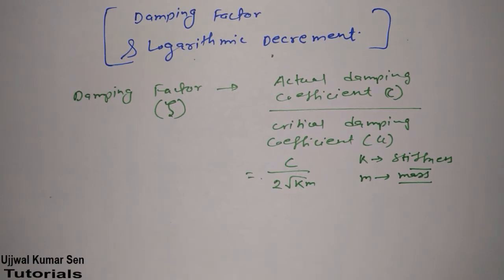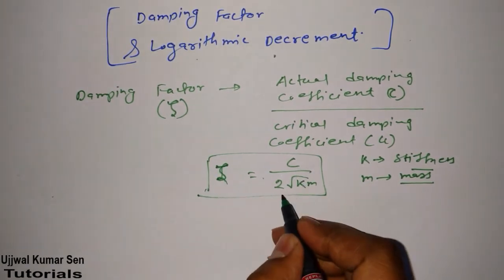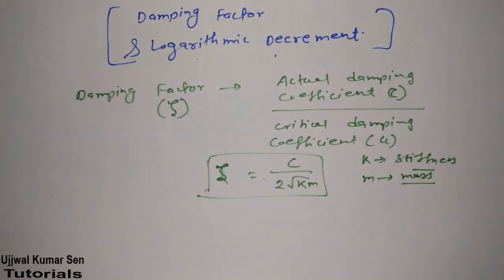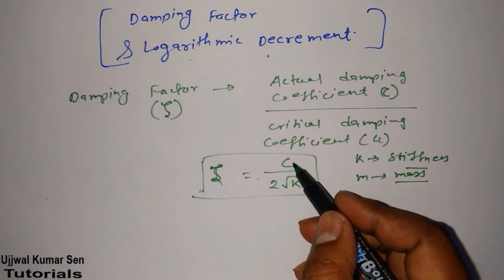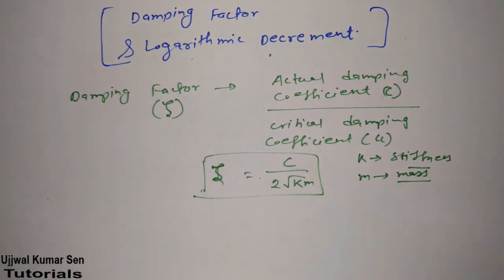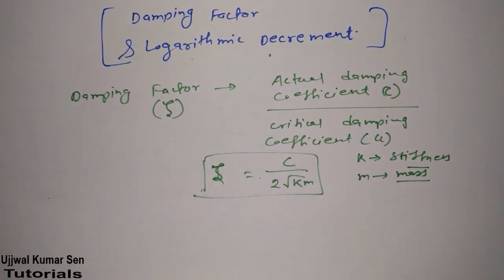So in the GATE examination, what they do, basically, they will relate these three things: zeta, C, 2 root under Km. I mean, if you can relate, they will give you this, find out this, and they will give this value. So in this way, you can find out related things. So this is about damping factor.